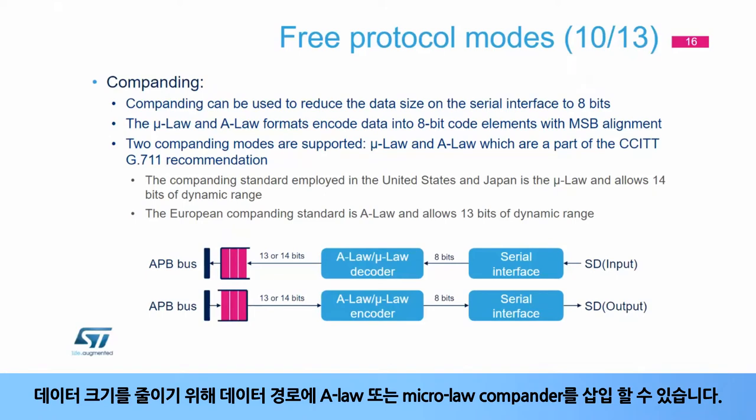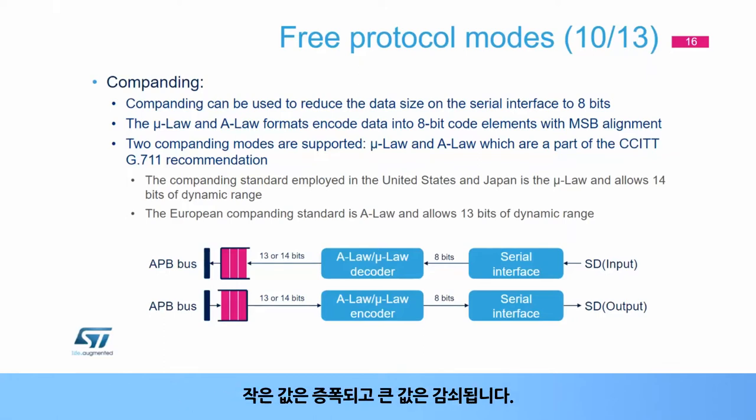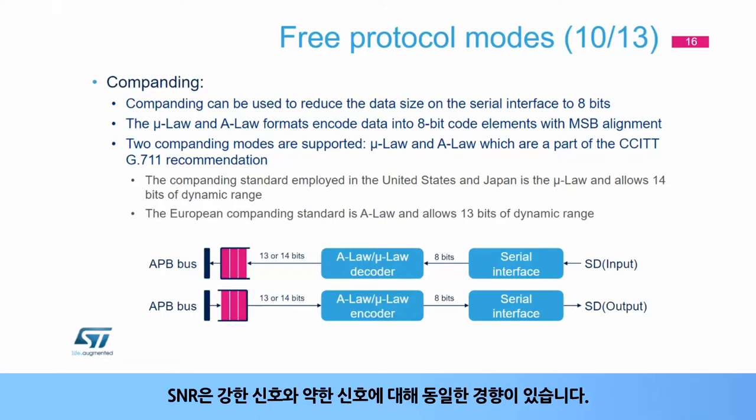In order to reduce the data size, it is possible to insert an A-law or µ-law compander in the data path. Note that A-law and µ-law are not lossless compressors. Companding modes are generally used in telephony. The small values are amplified and the big values are attenuated. The SNR tends to be identical for strong and for weak signals.